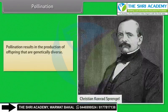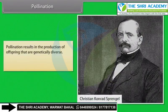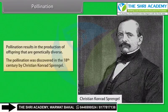Pollination results in the production of offspring that are genetically diverse. Pollination was discovered in the 18th century by Christian Conrad Sprengel.